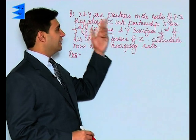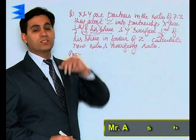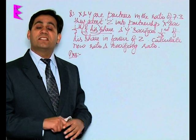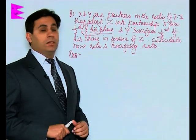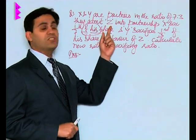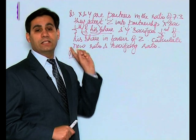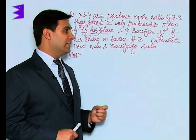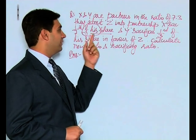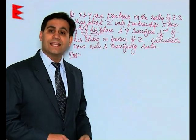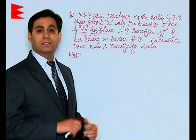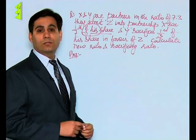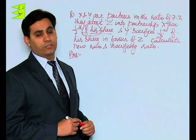Coming to a different question: X and Y are partners sharing profits and losses in the ratio of 7:3. They admit Z into partnership. In this case, Z's share is not mentioned directly. It further states that X sacrifices 1/7th of his share and Y sacrifices 1/3rd of his share in favor of Z. We are required to calculate the new ratio and the sacrificing ratio.